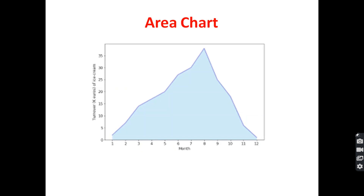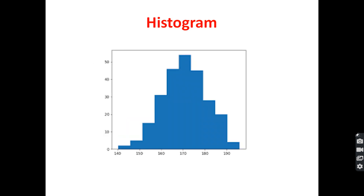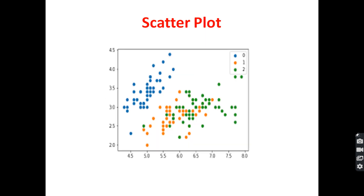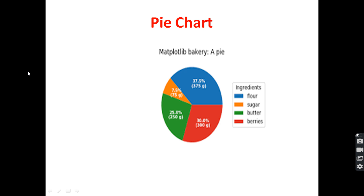This is called an area chart. The area chart is also drawn between the x-axis and y-axis. On the x-axis, month is shown, and on the y-axis, turnover is shown. This is called a histogram — histogram is also drawn between the x-axis and y-axis. And this is the scatter plot. And this is the pie chart.